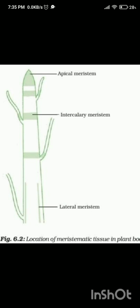The first type is apical meristem, which is found at the top of the plant — specifically at the tips of roots and shoots. Apical meristem is responsible for primary growth, which involves the lengthening of roots and stems.